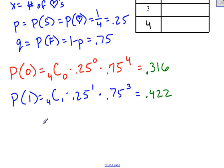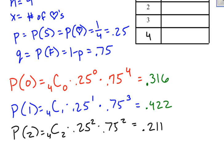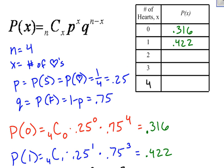The probability of getting two hearts: 4 choose 2, times 0.25 raised to the second power, times 0.75 raised to the second power. I've already done the math and get 0.211. So the probability of getting two hearts is 0.211.